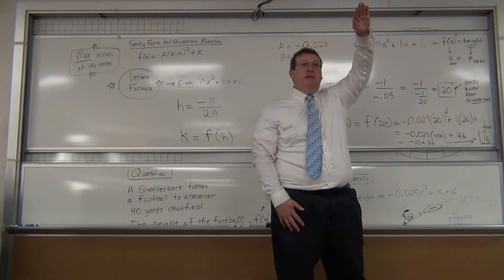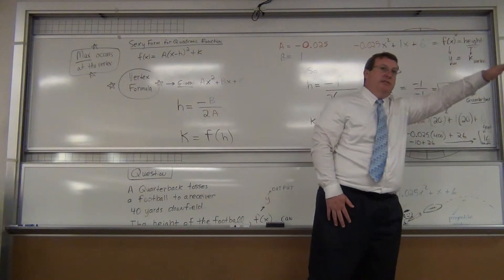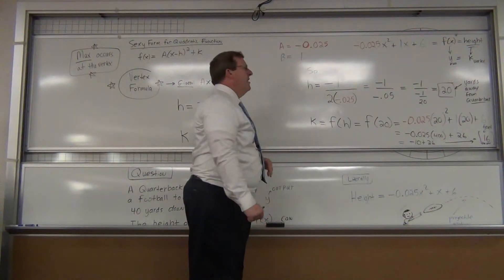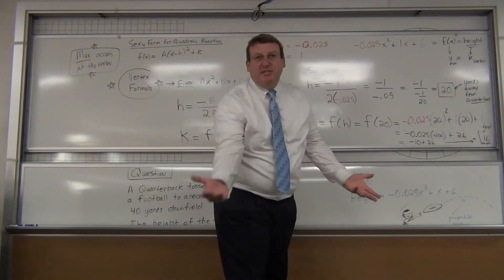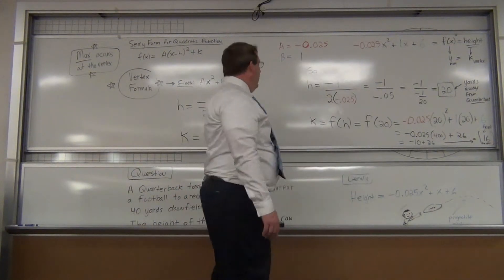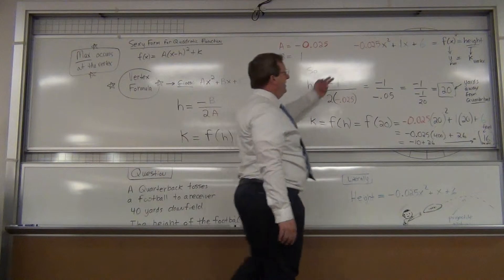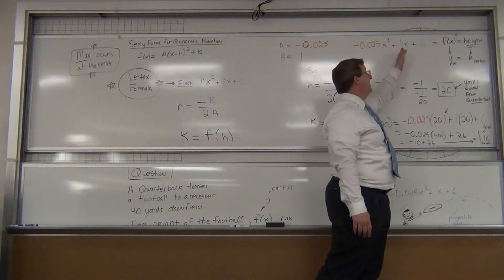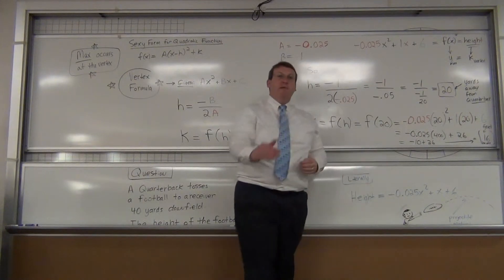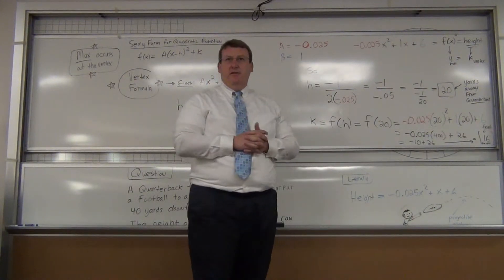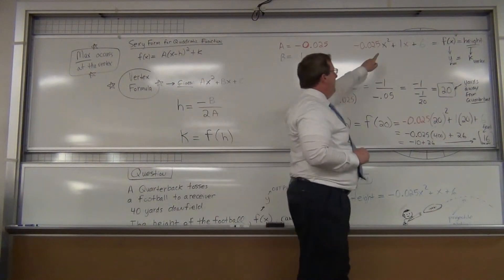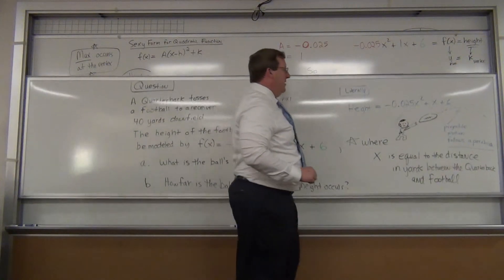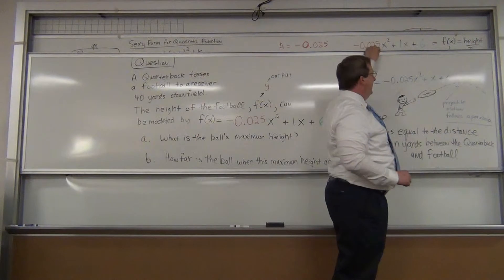So the maximum height of the football is 16 feet high, 20 yards away from the quarterback. And then what happens? When it reaches this maximum height, it starts going down until it goes into the receiver's hands or on the ground. But let's get some intuition. I actually want you to understand what's going on. Look at this formula: negative 0.025x squared plus x plus 6. That's a formula modeling height.